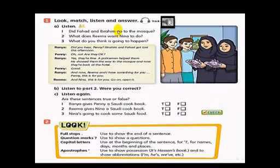Okay. Did Fahad and Ibrahim go to the mosque after being lost? Yes. What does Rima want Nina to do? She wants her to open her present. Number three. What do you think is going to happen? They have been given the wrong present.